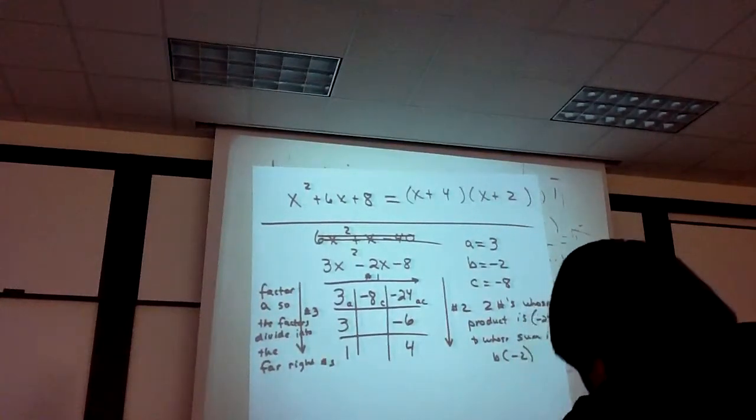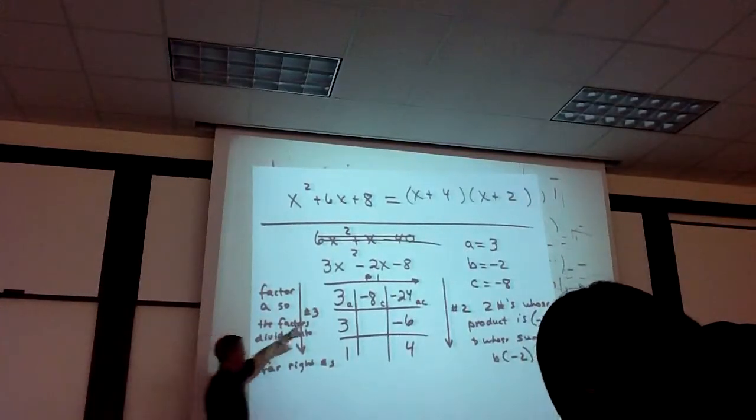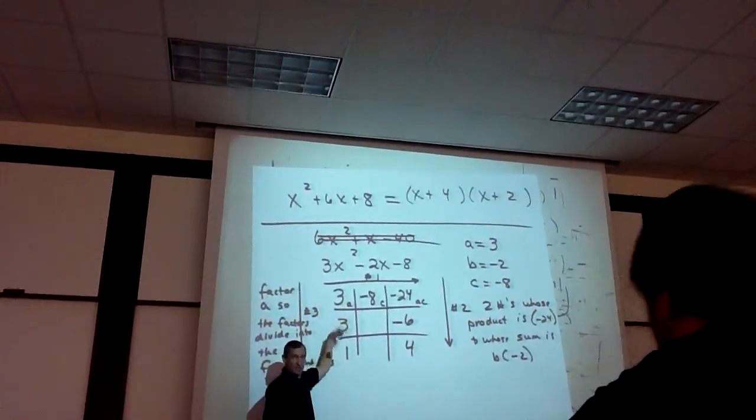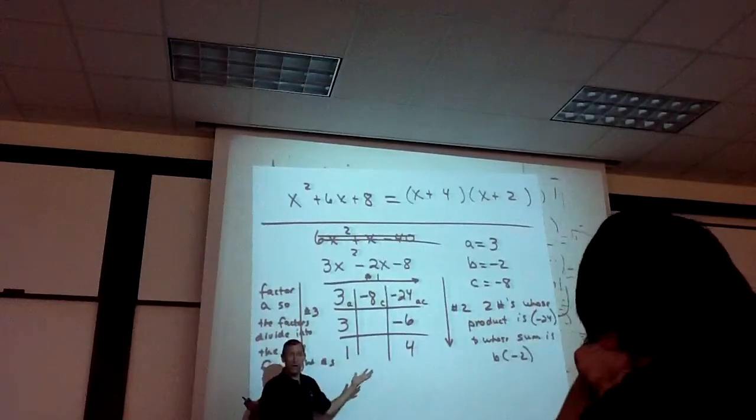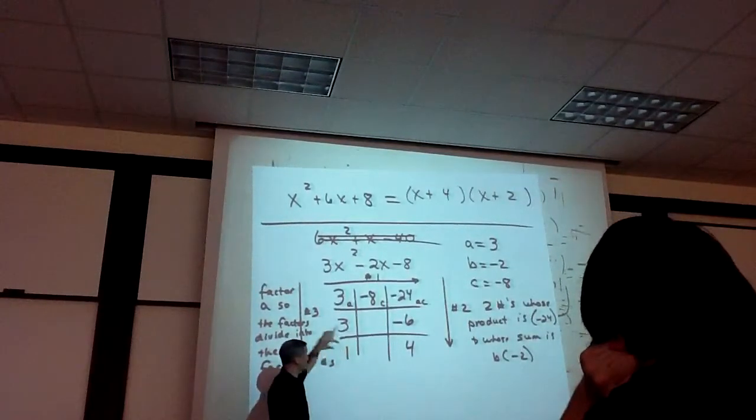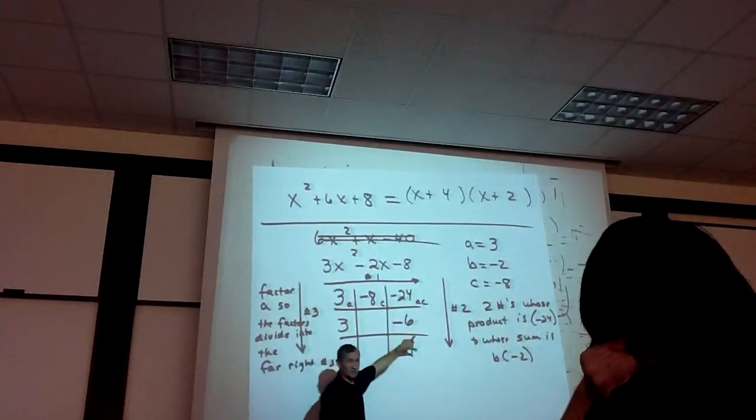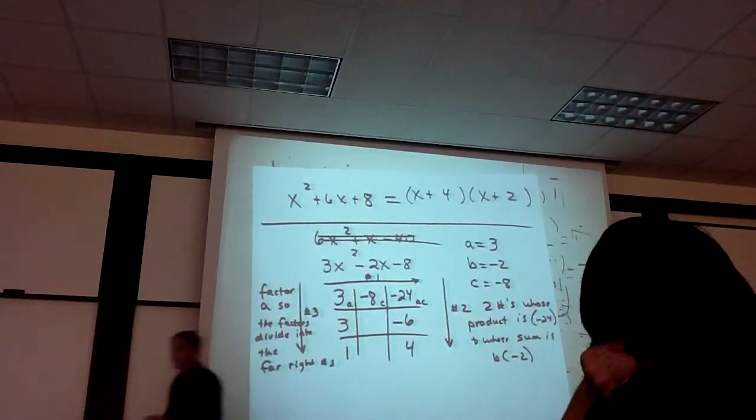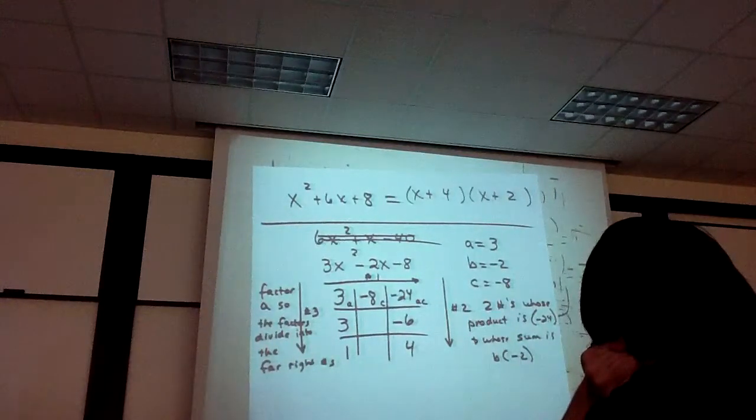And when we get to numbers, like if a was something and there's lots of possibilities, there's only one way you can factor it so that these two factors divide evenly into the far right numbers. So there's only one way to do it.